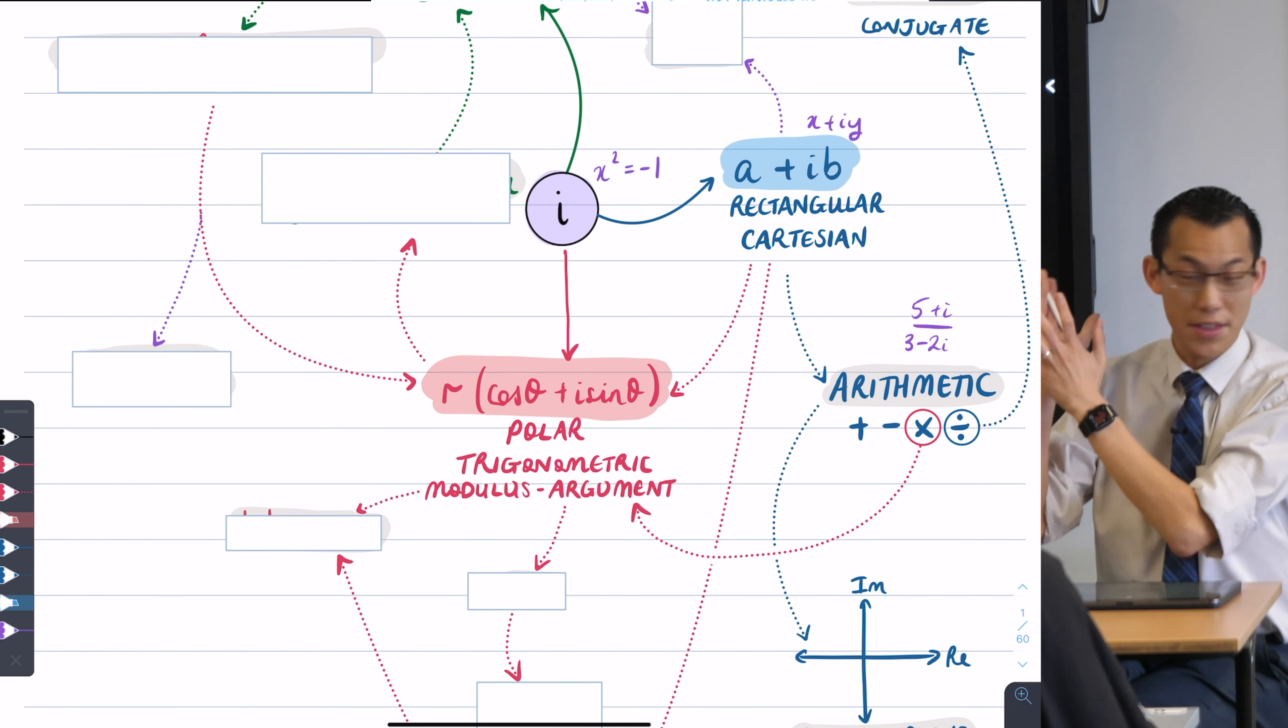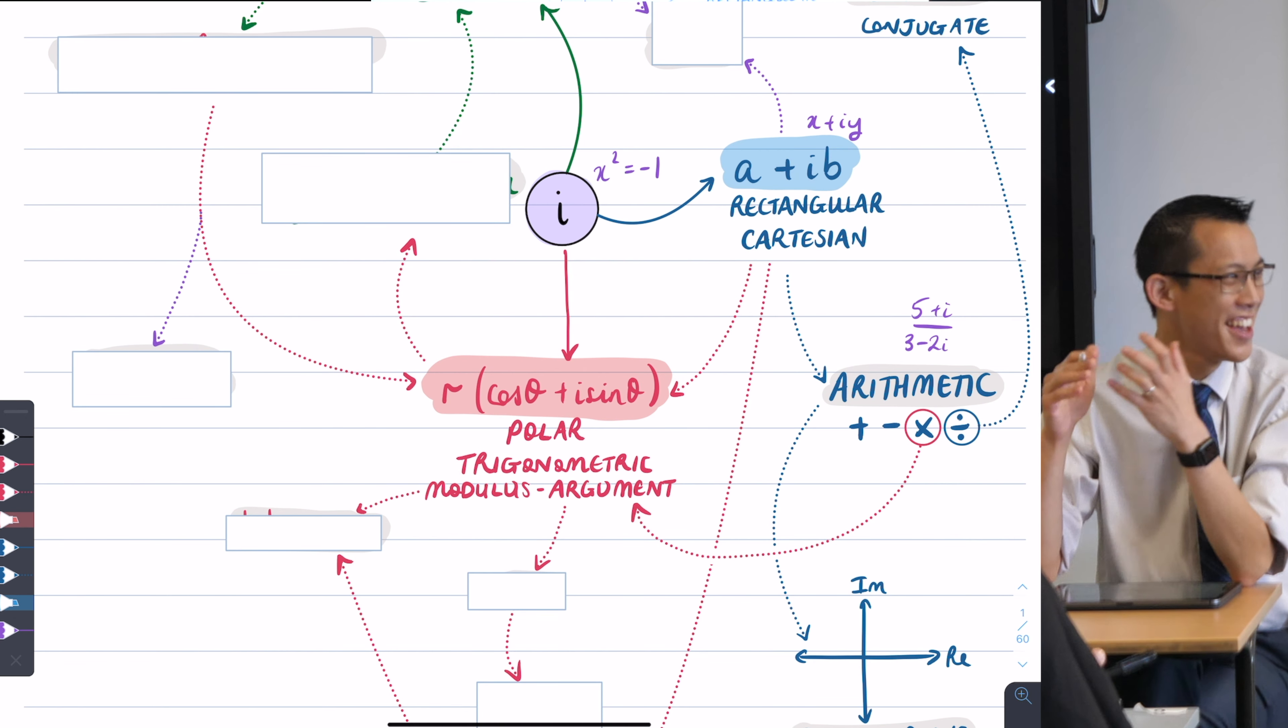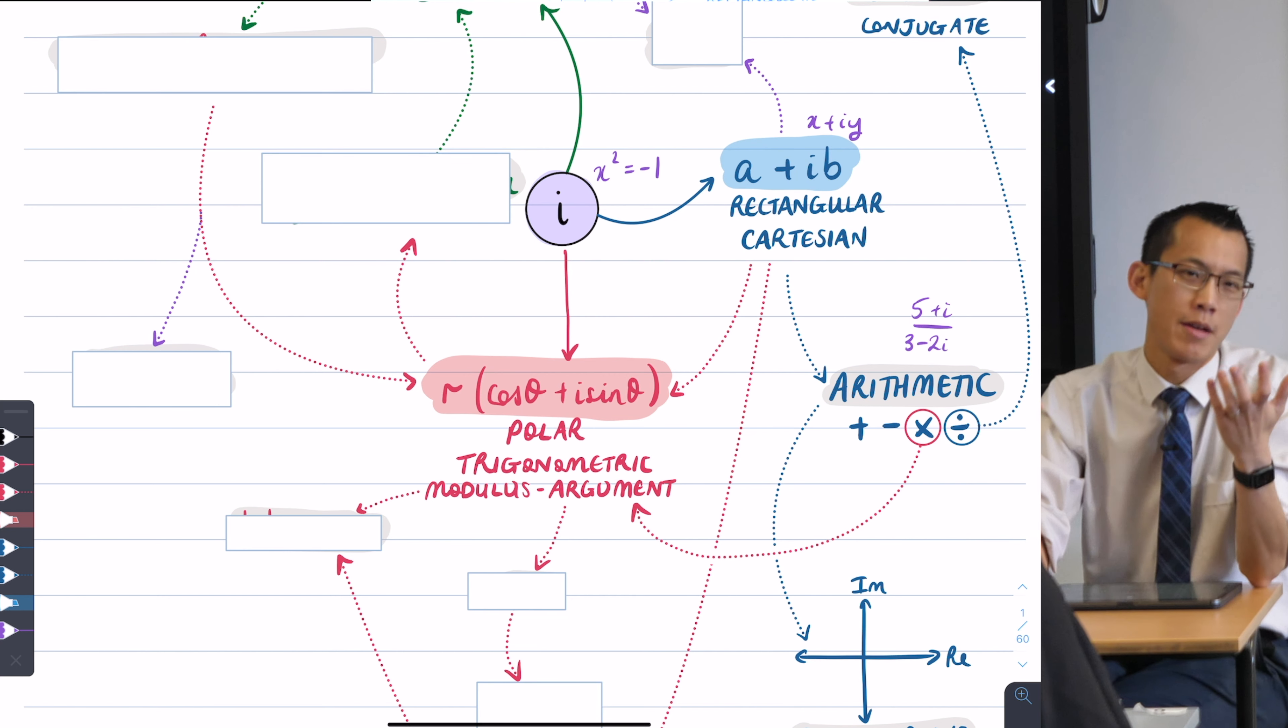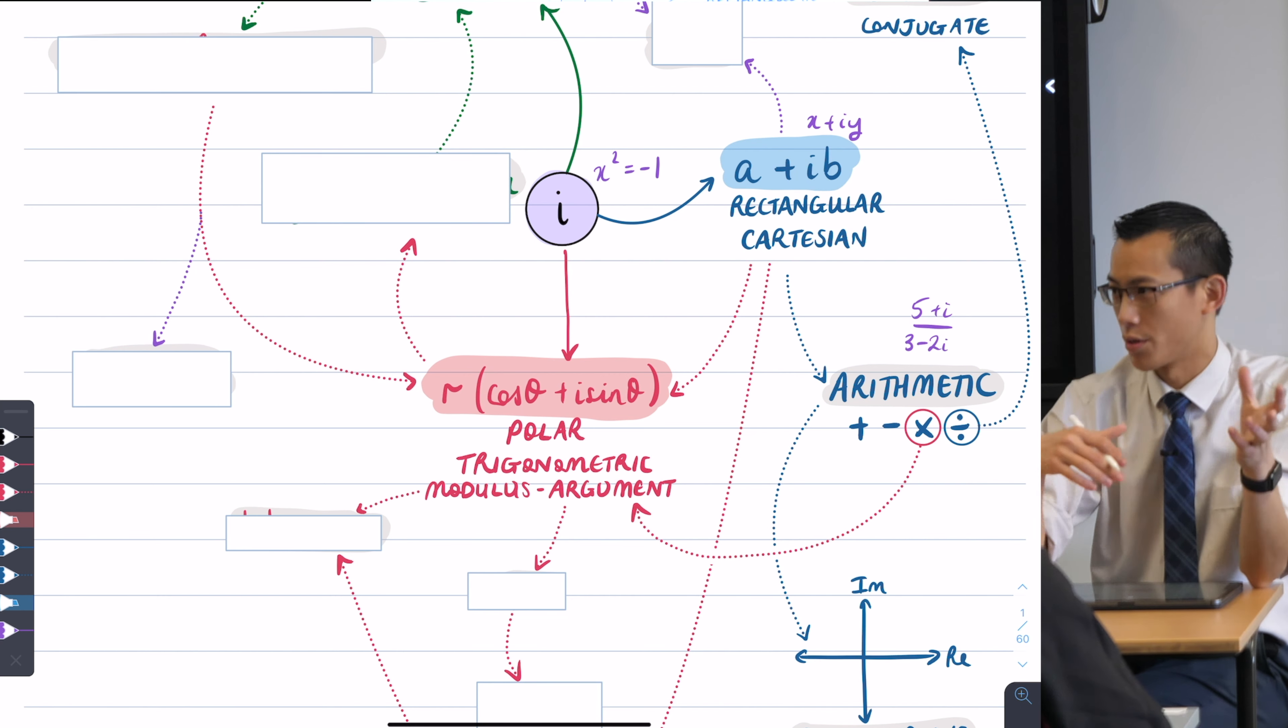So we realized that multiplication, you can see I've drawn this arrow here, it leads over to a whole different way to write our complex numbers. This is where we introduced this monstrosity, right? Polar form, mod arg form, trigonometric form, because it's in terms of sines and cosines.